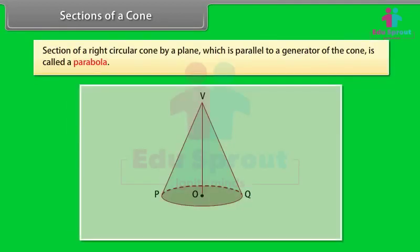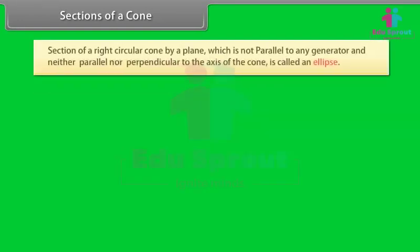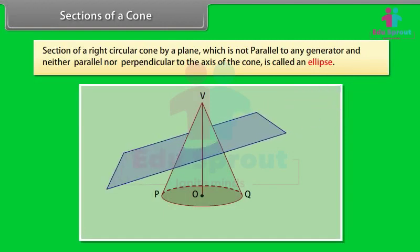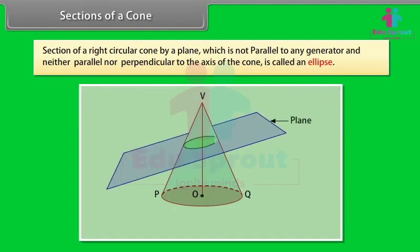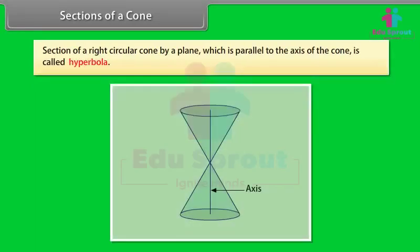Section of a right circular cone by a plane which is parallel to a generator of the cone is called a parabola. Section of a right circular cone is called an ellipse. Section of a right circular cone by a plane which is parallel to the axis of the cone is called a hyperbola.